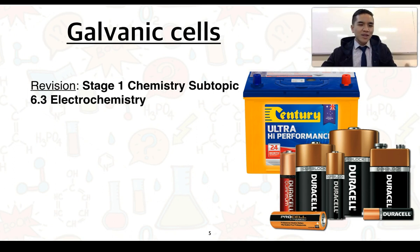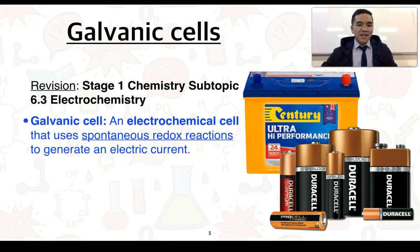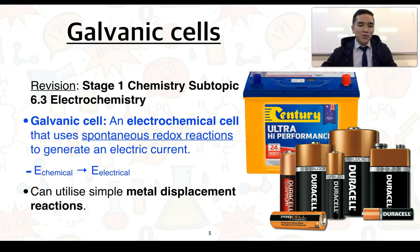Before we talk about fuel cells, it's worthwhile if we do a bit of a summary on galvanic cells. This is revising concepts from stage 1 chemistry in subtopic 6.3 in electrochemistry. A galvanic cell we can define as an electrochemical cell that uses spontaneous reactions to generate an electric current. Another way of saying this is that it converts chemical potential energy into electrical energy. Galvanic cells can utilise simple metal displacement reactions.